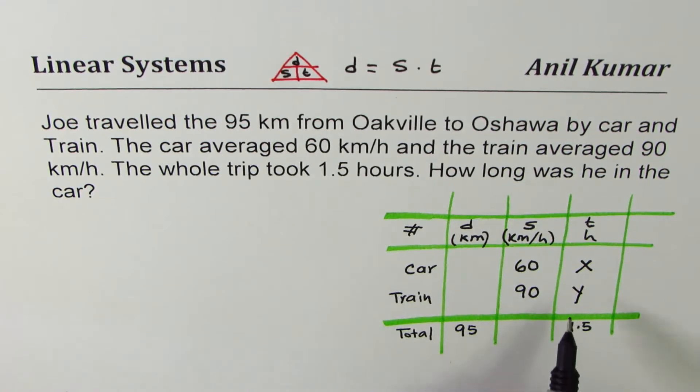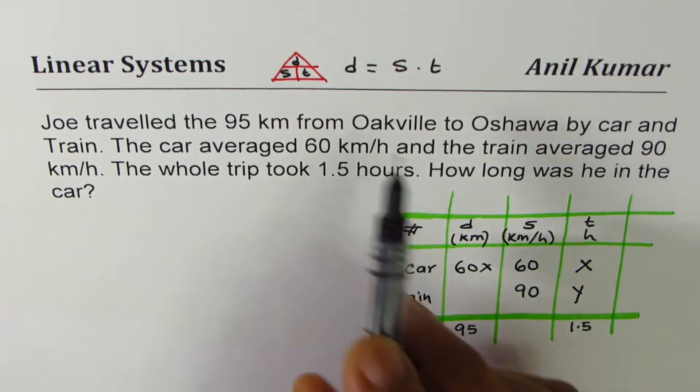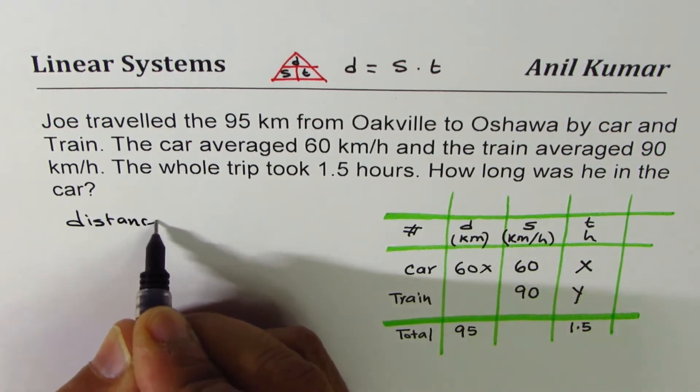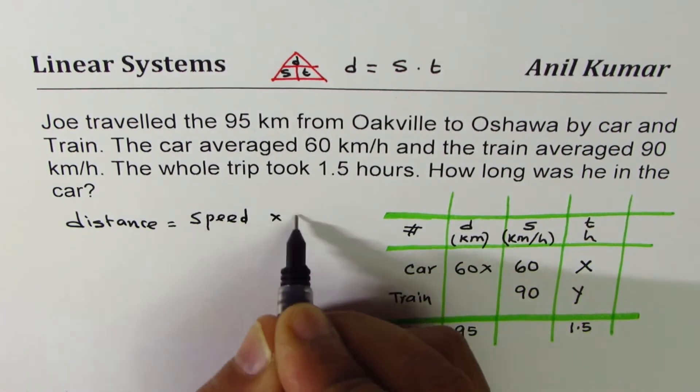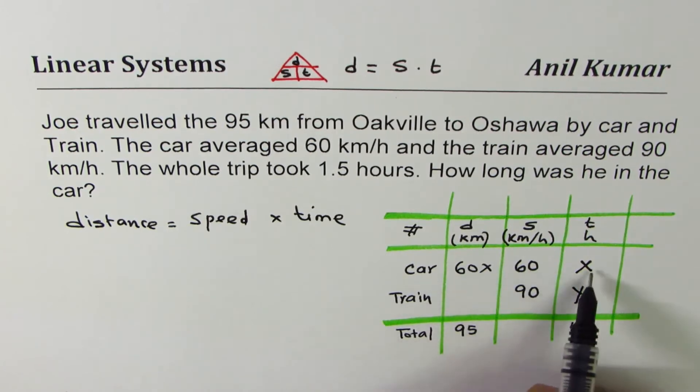Now, if time traveled for car is x, then distance will be 60 times x. 60x. Since distance is speed into time. So we have distance equals to speed times time. So distance is speed into time. For train, the distance should be 90y.